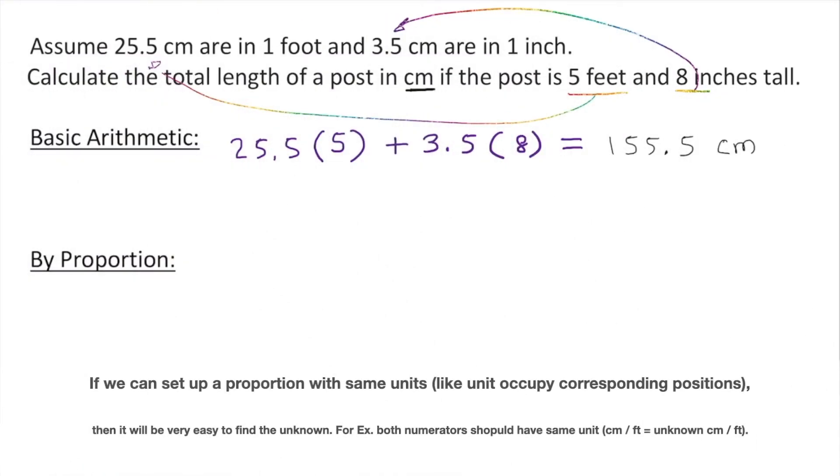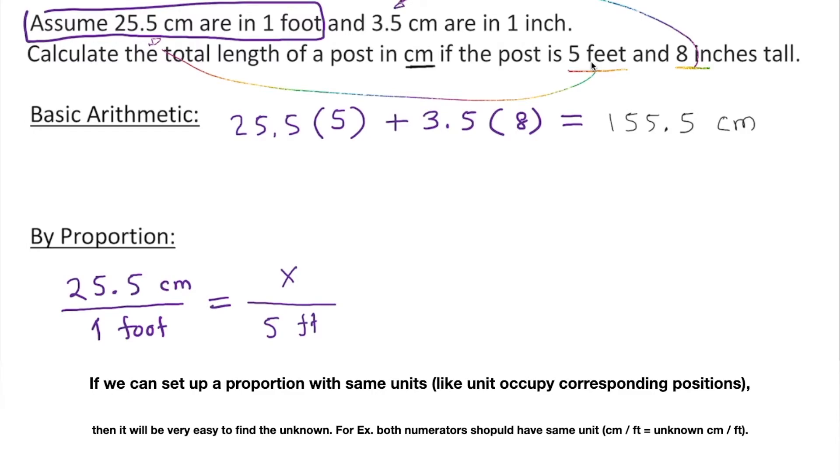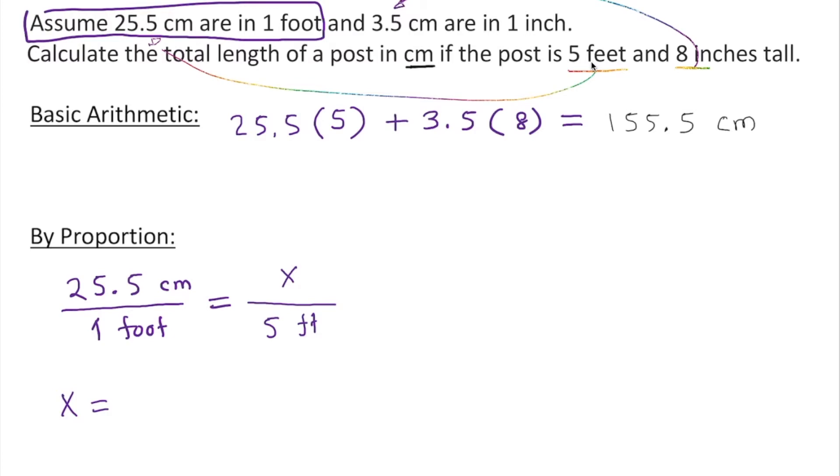We can also look at a different way by proportion. We're going to convert the first sentence into a proportion. We know that 25.5 centimeter over 1 foot equals x over 5 feet. We can just cross product: 1 times x is x, and 5 times 25.5 gives us 127.5 centimeters.